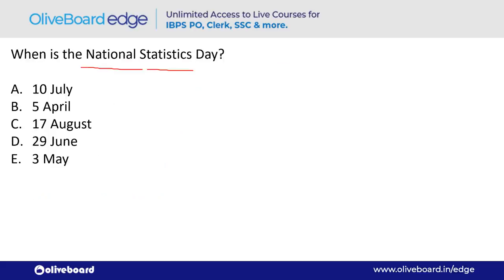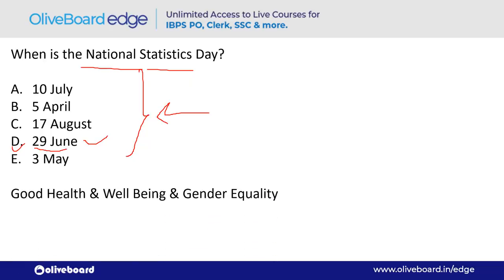When does National Statistics Day take place? The answer is 29th June — option D. The theme was 'Good Health and Well-Being and Gender Equality.'